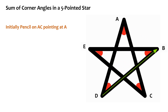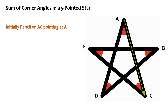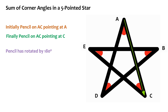Then we rotate it through D so that it lies on BD — it is pointing at B. We then rotate it through B to make it coincide with BE. Let's now rotate it through E so that it lies on EC — the arrow is pointing towards C. Finally, let's rotate it through C so that it lies on CA — the arrow is now pointing towards C. The direction of the arrow has changed; it is now in the opposite direction to its starting point, meaning it has rotated by 180 degrees. So the angle sum of the pentagram is 180 degrees.